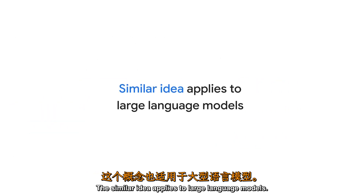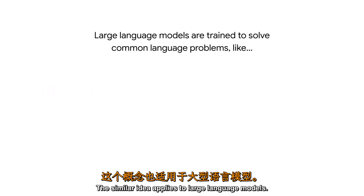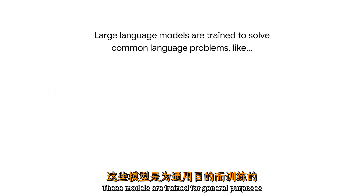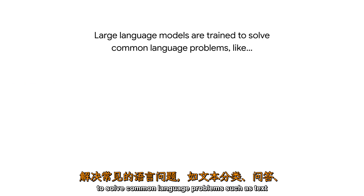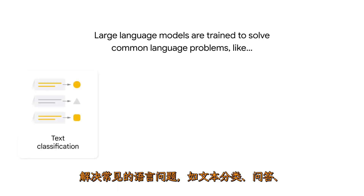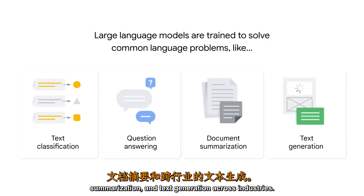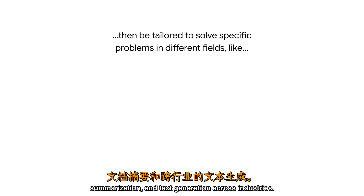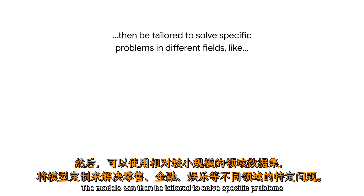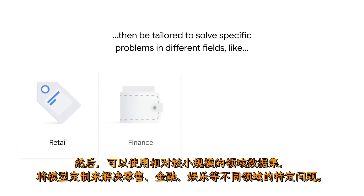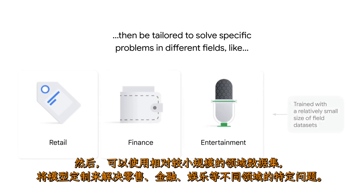This similar idea applies to Large Language Models. These models are trained for general purposes to solve common language problems such as text classification, question answering, document summarization, and text generation across industries. The models can then be tailored to solve specific problems in different fields such as retail, finance, and entertainment using a relatively small size of field datasets.